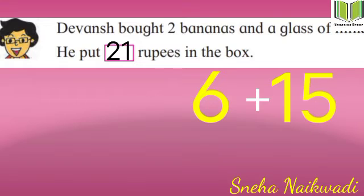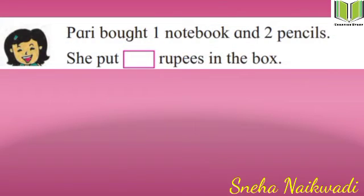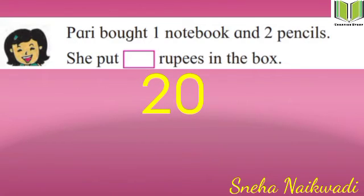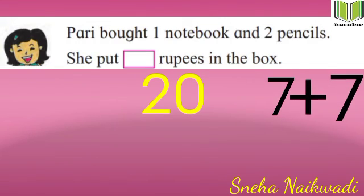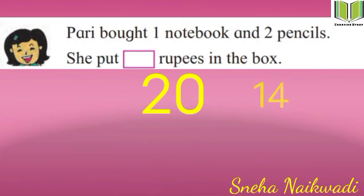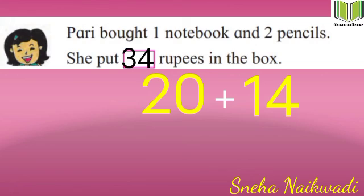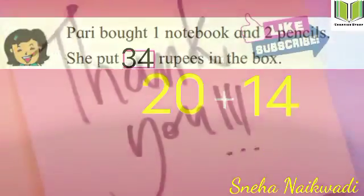Pari bought one notebook and two pencils — she put how many rupees in the box? One notebook is 20 rupees. The pencil price is 7 rupees, so two pencils are 7 plus 7 = 14 rupees. So 20 plus 14 = 34 rupees. She put 34 rupees in the box. Children, understood? Thank you!